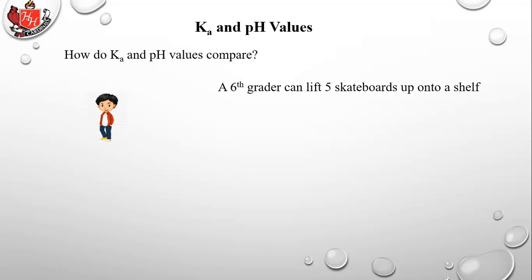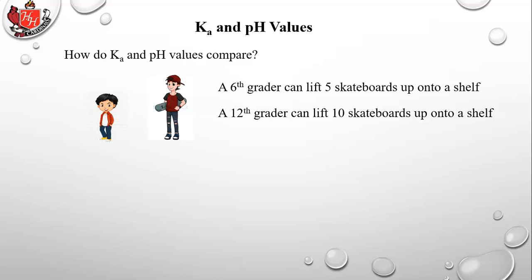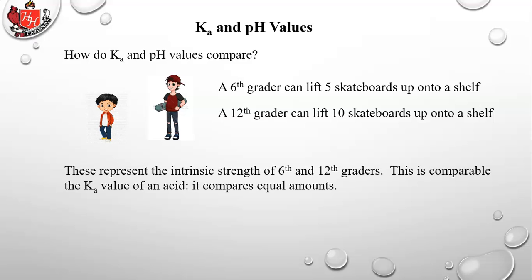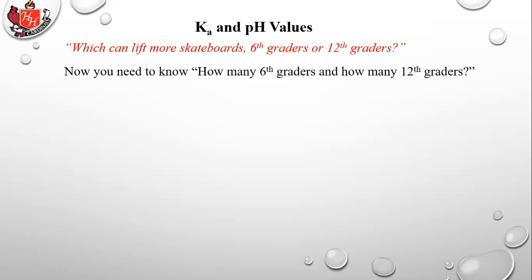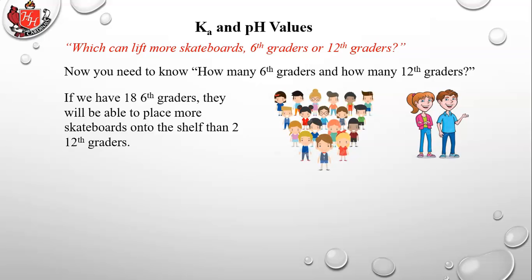Here's a metaphor: a sixth grader can lift five skateboards onto a shelf; a 12th grader can lift ten. So one 12th grader is intrinsically stronger — this is comparable to the Ka value comparing equal amounts. But if you have 18 sixth graders versus two 12th graders, the sixth graders will place more skateboards on the shelf overall, even though each 12th grader is intrinsically stronger.